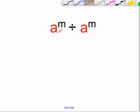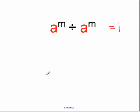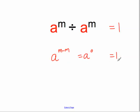Firstly, consider a base number, say a to the power of m, divided by the same thing, a to the power of m. Well, anything divided by itself gives you 1. But using the division rule with indices, we know that a to the power of m divided by a to the power of m must equal a to the power of m minus m, i.e. a to the power of 0. We've just said this whole thing equals 1, so therefore a to the power of 0 equals 1. Any number to the power of 0 always gives you the answer 1.